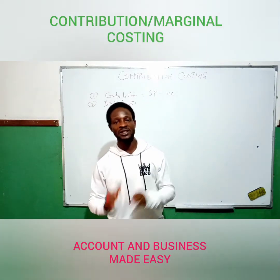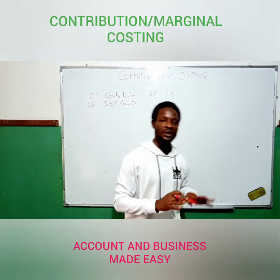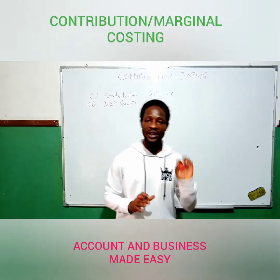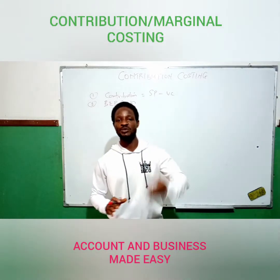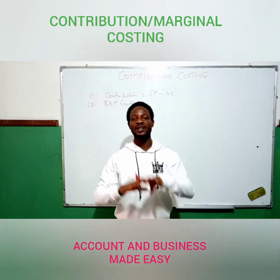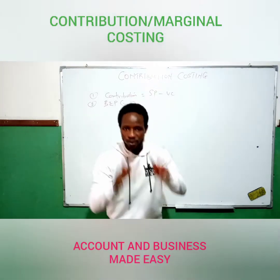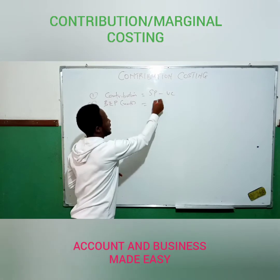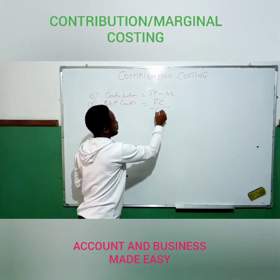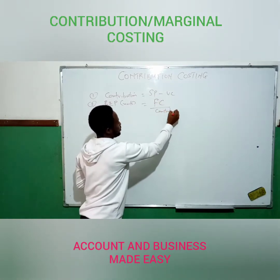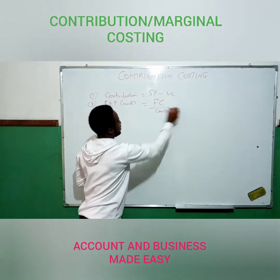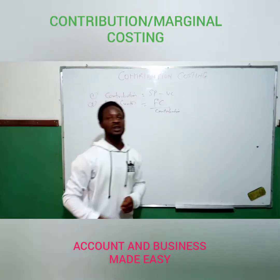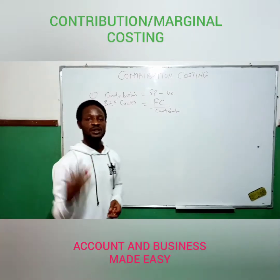At break-even point, total cost is equal to total revenue — there is no profit and there is no loss. So how many units to produce to make no profit and no loss is called break-even point in units, and that is equal to fixed cost divided by contribution per unit.